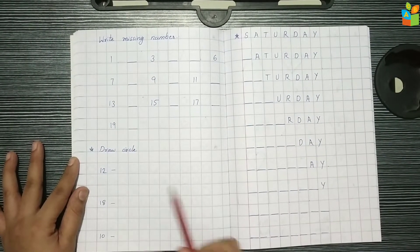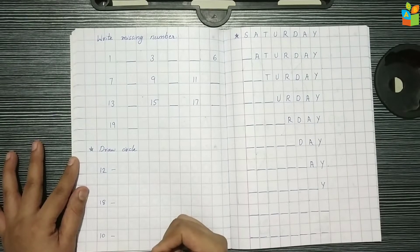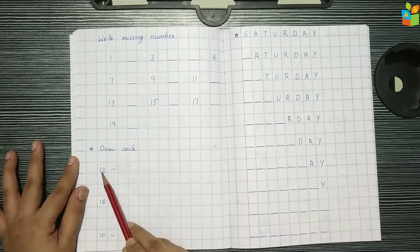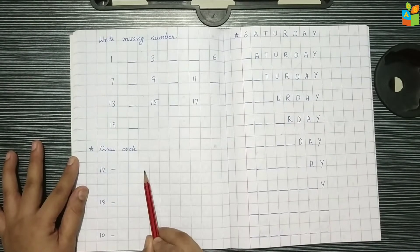Next is draw circles. I have written here some numbers. So the child has to identify which number it is and then draw the circles here.